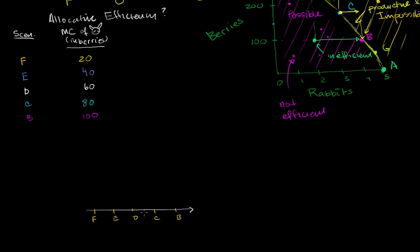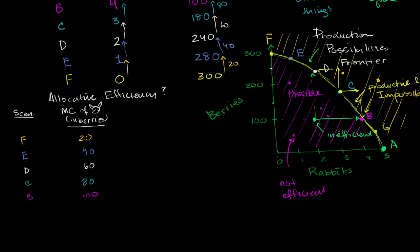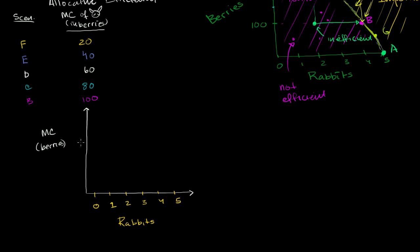So the horizontal axis is the number of rabbits that you're able to catch on average each day. In scenario F you have zero rabbits, going up to five. On the vertical axis I want to put the marginal cost in berries, ranging from 20 up to 100.